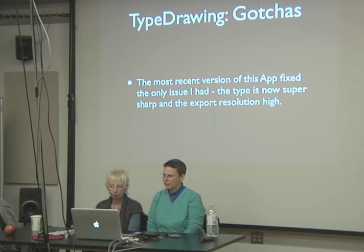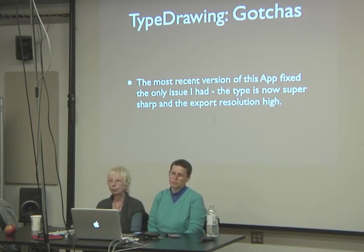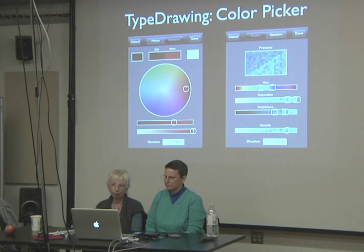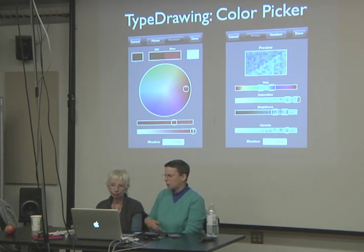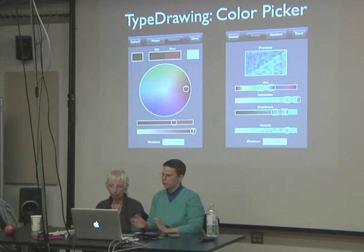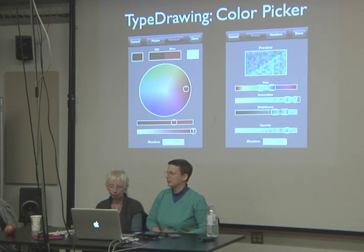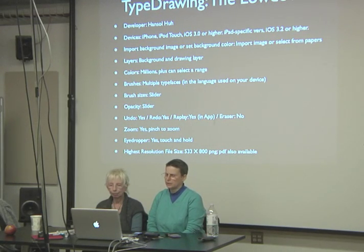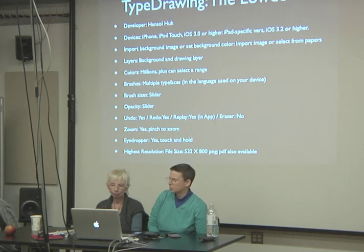Type Drawing gotchas: the original version was only black and white, the next was still pretty low-res. The most recent version fixed the only issue I had — the type is now super sharp and export resolution is high. On the left is the color variation slider; on the right you can pick a range for hue, saturation, and brightness. There's no range for opacity — you select a single opacity.